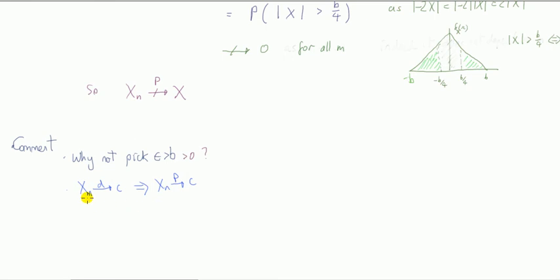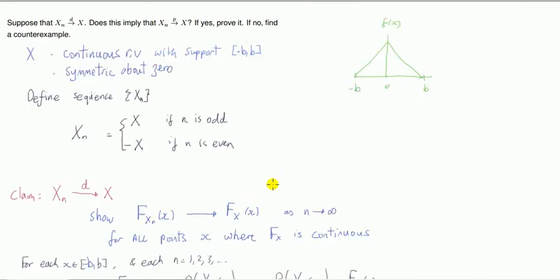Some of you may already know the result that if X_n tends in distribution to a constant, then this implies it converges... Did I? Let me start again. If X_n, sequence of X_n, converges in distribution to a constant, then it converges in probability to a constant.